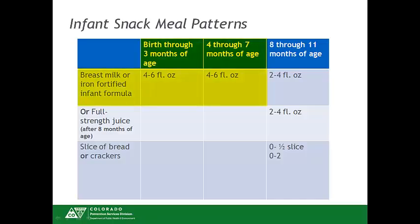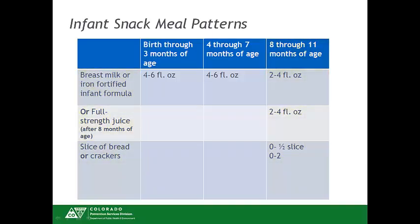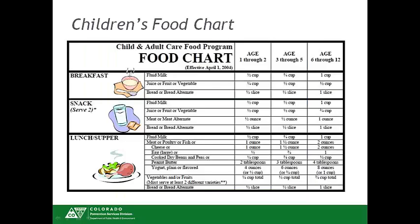For infant snack, the 0 through 3 month olds and 4 through 7 month olds only require breast milk or infant formula. The 8 through 11 month olds require breast milk, infant formula, or full strength juice. Once the infant is developmentally ready, the center must also offer bread or crackers to the 8 through 11 month olds. This is the Colorado CACFP children's food chart, which sites use as a reference to ensure all meals and snacks are meeting the CACFP meal patterns.